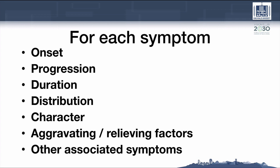From the chief complaint you can decide where to start among these six systems. For example, someone came with right arm weakness: ask about the onset, ask about the progression, ask about the duration, and ask about the distribution — you may also find right leg involvement. Ask about severity, character, aggravating or relieving factors, and then screen for associated symptoms across mental status, cranial nerves, sensory, gait coordination, and autonomic systems. Whatever is positive, apply the full analysis. Whatever is negative, mention it as an important negative.